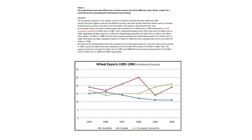Regarding Canada's exports, in 1985 they shipped approximately 19 million tonnes of wheat. This figure fell to about 17 million in 1986, but then their exports experienced considerable growth to 25 million tonnes in 1988.